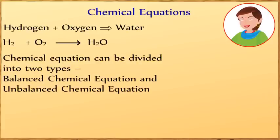Chemical equations can be divided into two types: balanced chemical equation and unbalanced chemical equation.